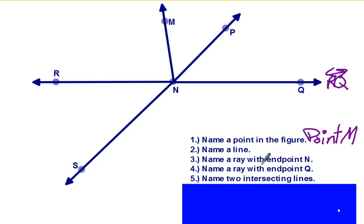Name a ray with end point N. So let's say, how about NR. So we would call this ray NR. Remember put the end point first. You could also do NP, NM, NQ, NS. Any of those is fine. And name two intersecting lines. You would say line SP intersects line RQ.